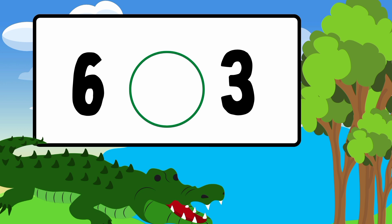Let's compare 6 and 3. The alligator's mouth wants to eat the bigger number, so the greater than symbol is pointing towards 6.